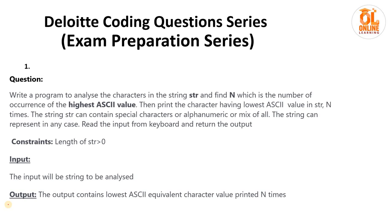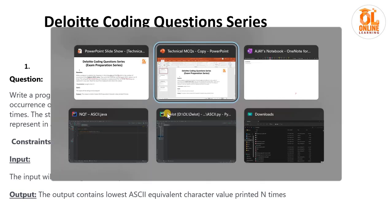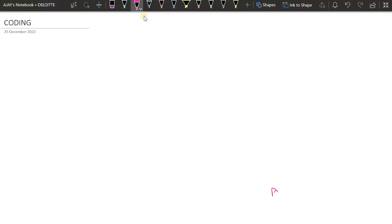Same way for this coding as well — this would just be informative for you all. Without wasting much further time, let's start. The first question: write a program to analyze the characters in the string 'str' and find N, which is the number of occurrences of the highest ASCII value character, then print the character having the lowest ASCII value in 'str' N times.